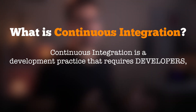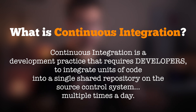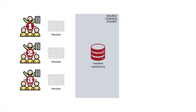Now that we have a clear understanding of what's wrong with the current integration process, let's see how continuous integration can help. Continuous integration is a development practice that requires developers — not a separate team that does the integration — to integrate units of code into a single shared repository on the source control system multiple times a day. The absence of a separate, dedicated integration team requires developers to integrate the code themselves, meaning each team and each developer has to do a bit of extra work to make sure the code works with the rest of the code.